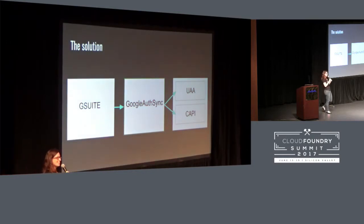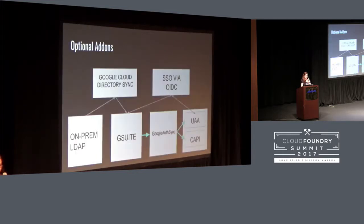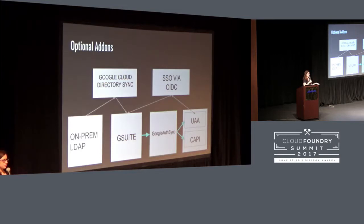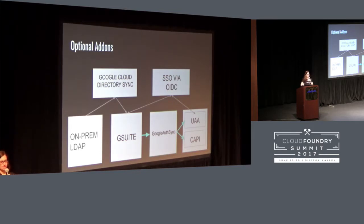So this is the solution — the sync is under active development, pulling from G Suite into UAA and CAPI. Single sign-on via OpenID Connect is available right now with UAA, and that makes a lot of sense to add. Google Cloud Directory Sync gives you the full workflow from LDAP to single sign-on, with all of these permissions propagated throughout your system with consistency.